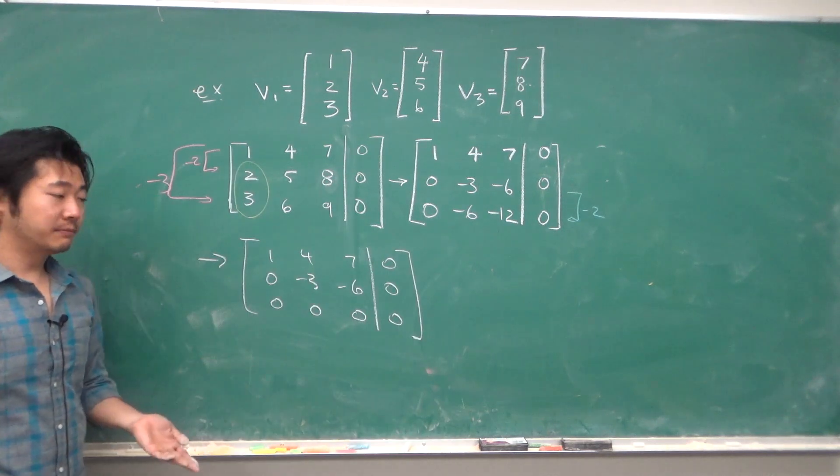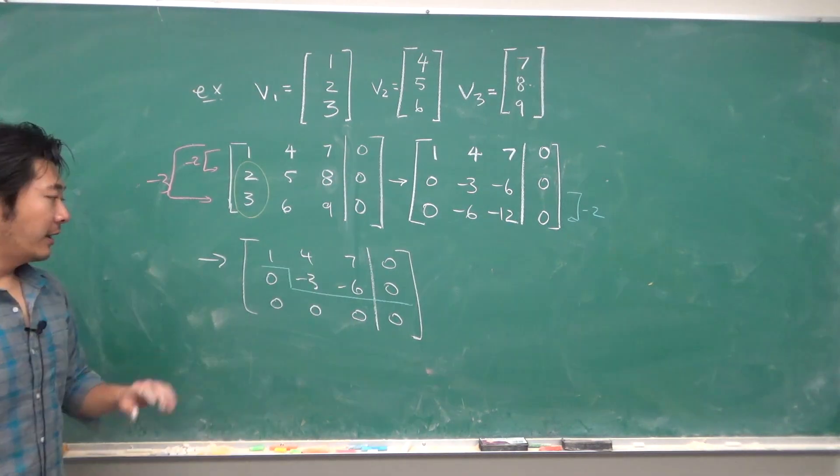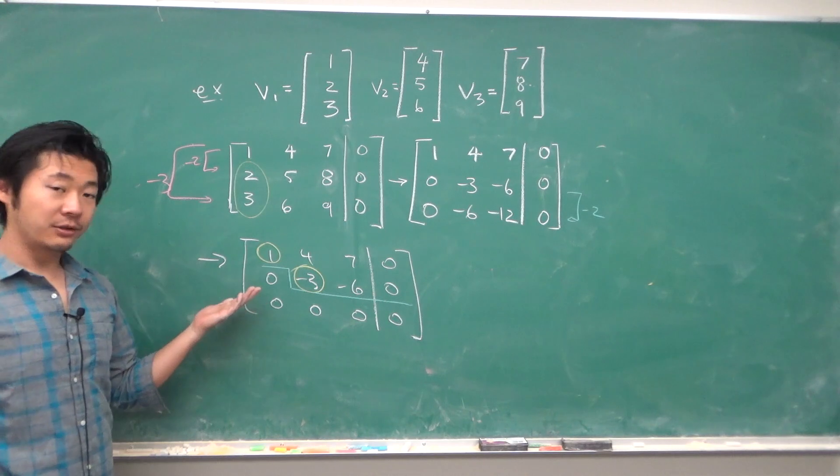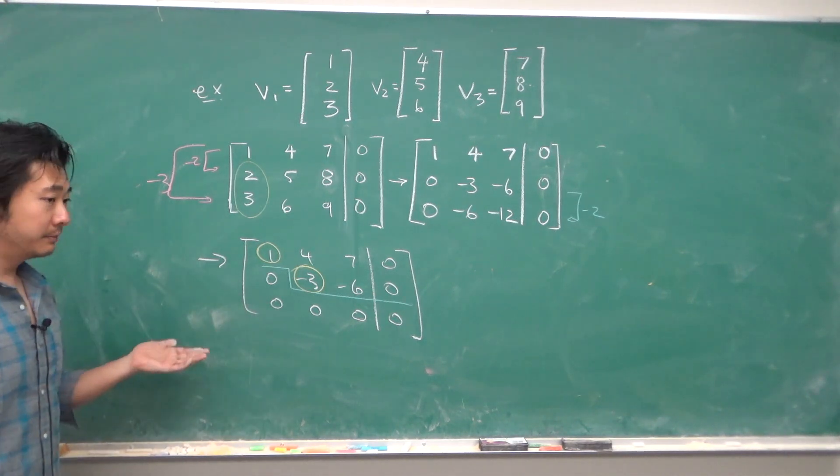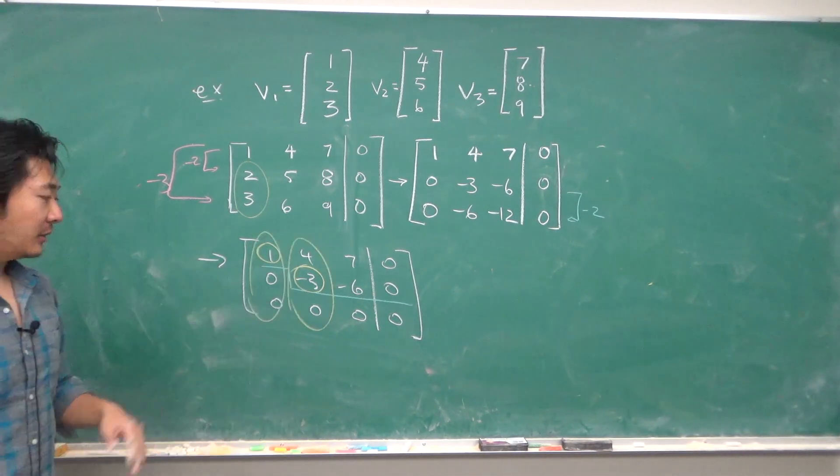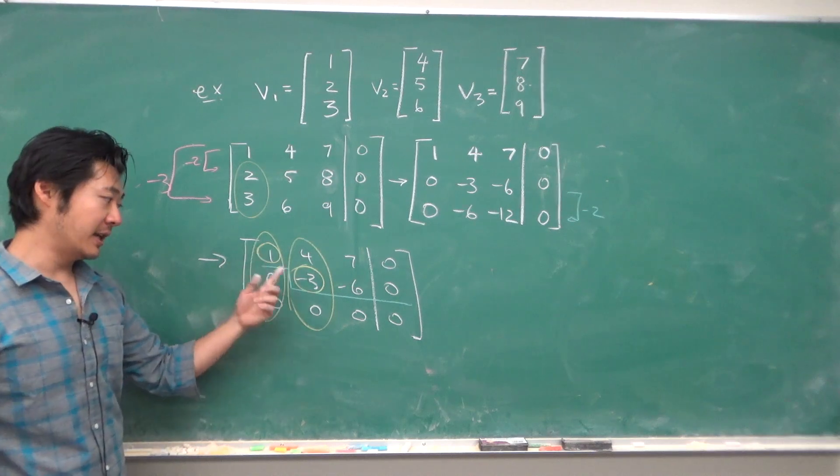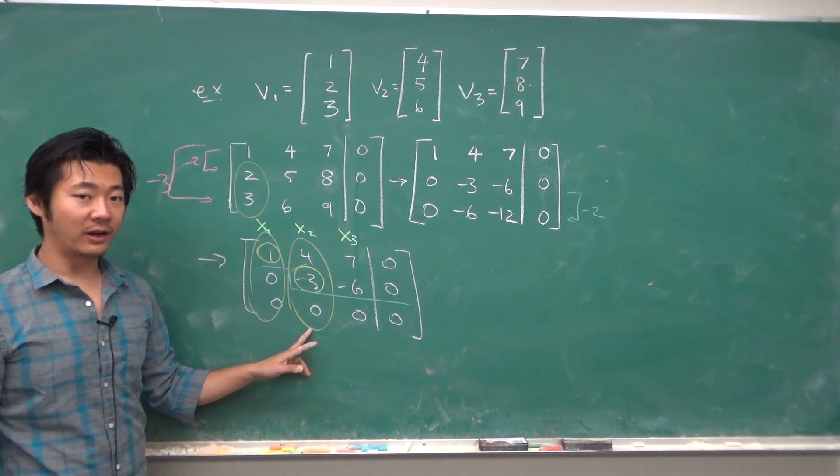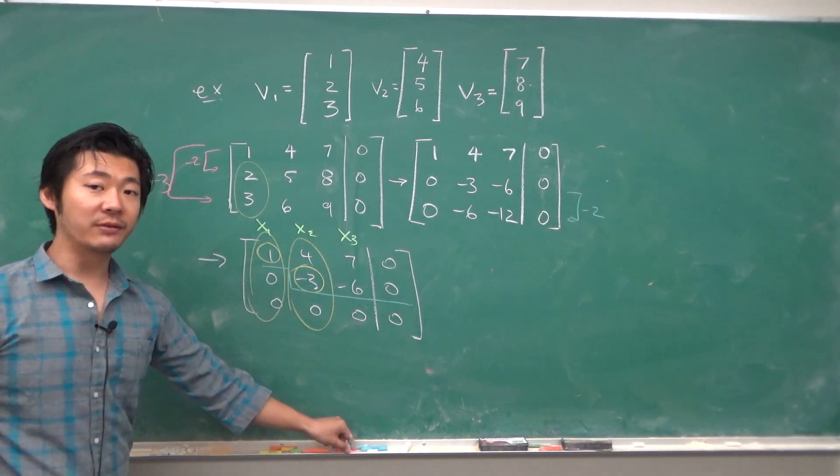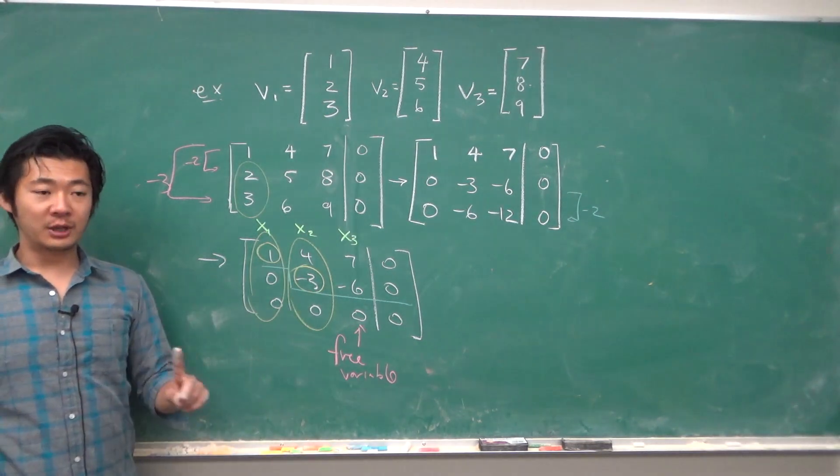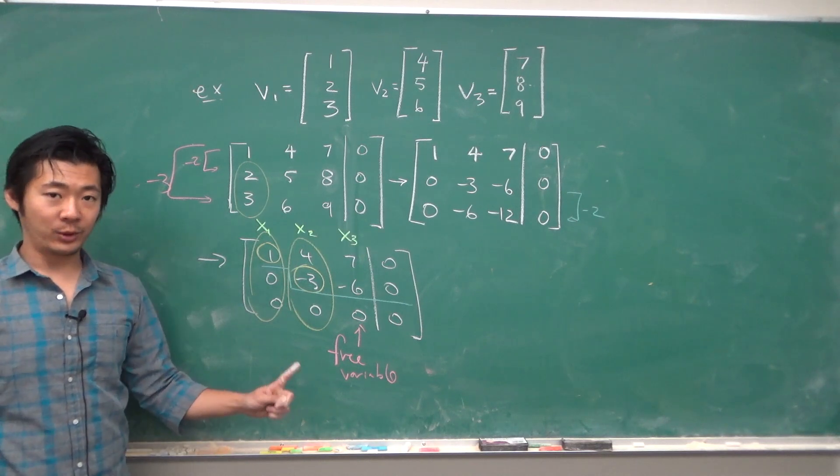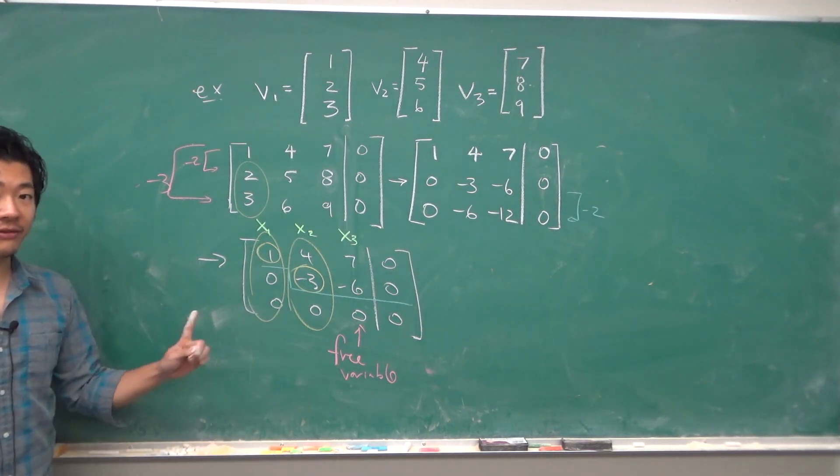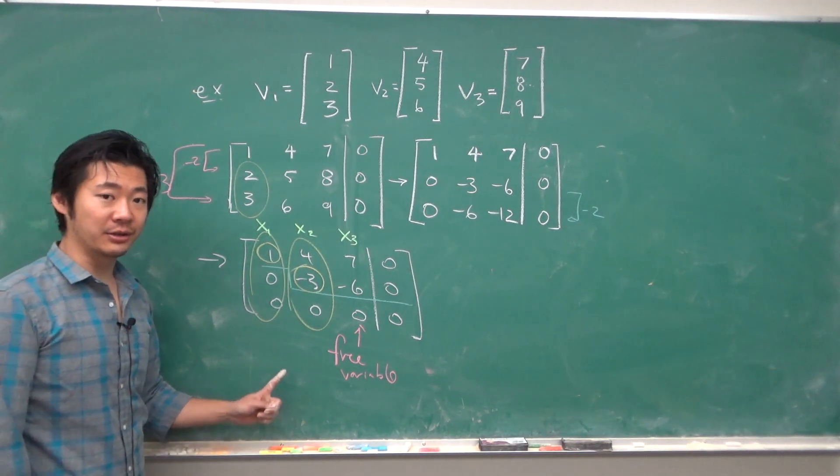Now this is an echelon form and our pivots are the non-zero leading entries to each row. Our pivot columns are these two columns because they contain the pivot entries. So x1 and x2 are your basic variables, and x3 is a free variable, which means that for different values of the free variable we will have a different solution, so we will have infinitely many solutions besides just 0,0,0.